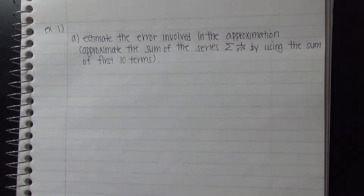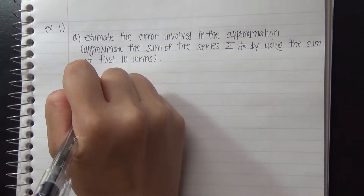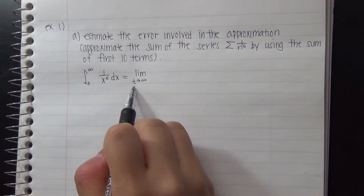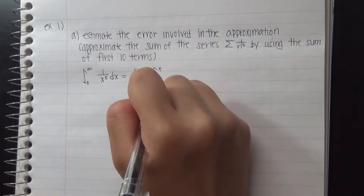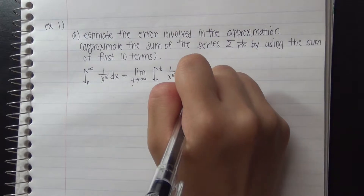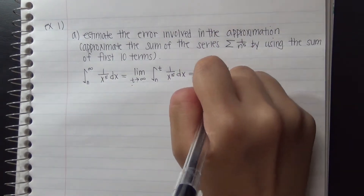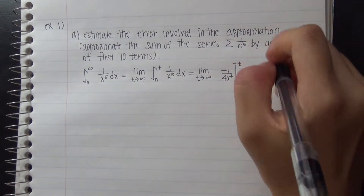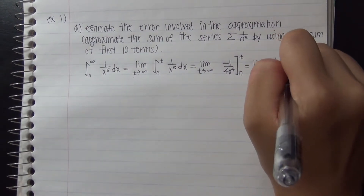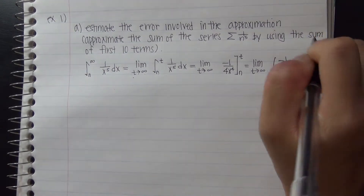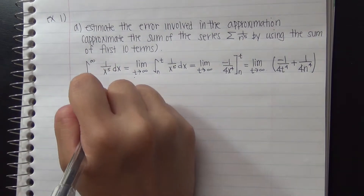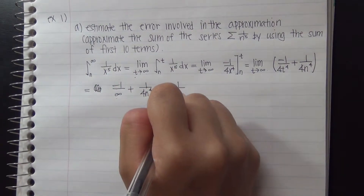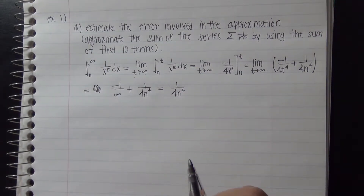We'll first solve the integral. The integral of 1/x^5 is evaluated as the limit as t goes to infinity of the integral from n to t. This gives negative 1/(4x^4). Solving this limit, we get negative 1/(4t^4) + 1/(4n^4), and as t goes to infinity the first term goes to 0, so the result is 1/(4n^4).